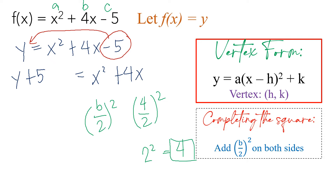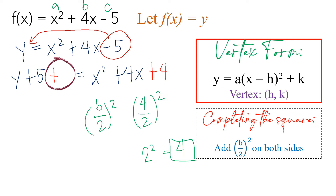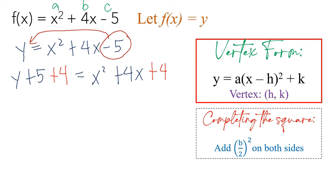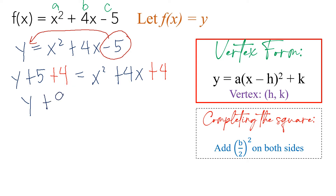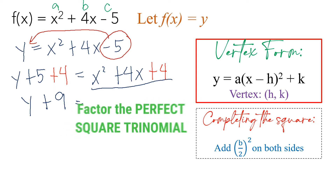So we need to add positive 4 on the right side. And to keep it balanced, we also add 4 on the other side — so plus 4 on both sides. Then simplify: y, and then 5 plus 4 gives you 9. This expression on the right is now a perfect square trinomial, so we can factor it.